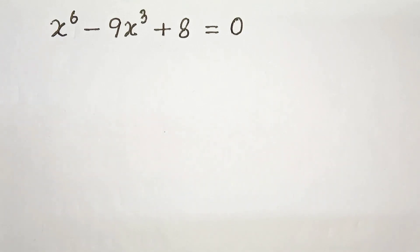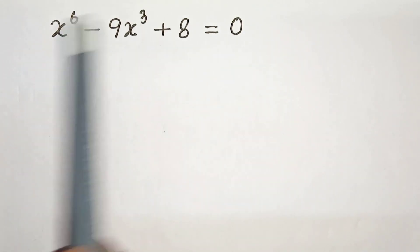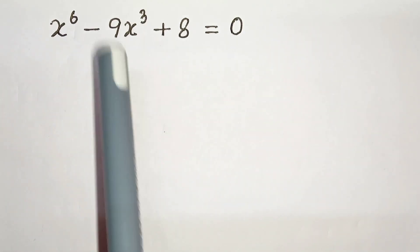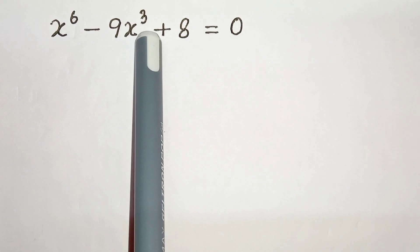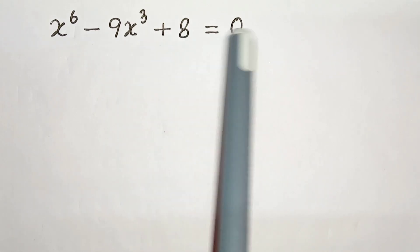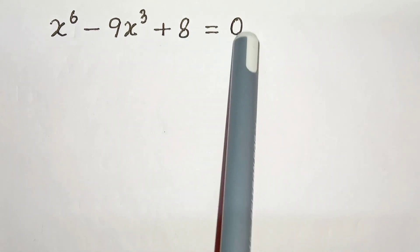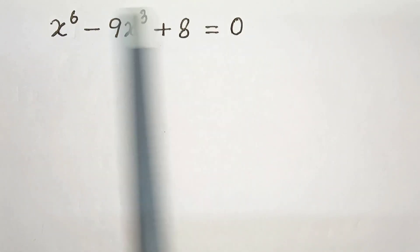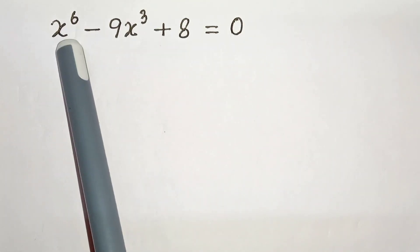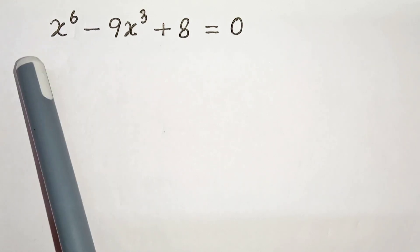Hello everyone. In this video we have the algebraic equation x to the power 6 minus 9x cubed plus 8 equals to 0. We have to solve this and find the solutions for x. So let's start.